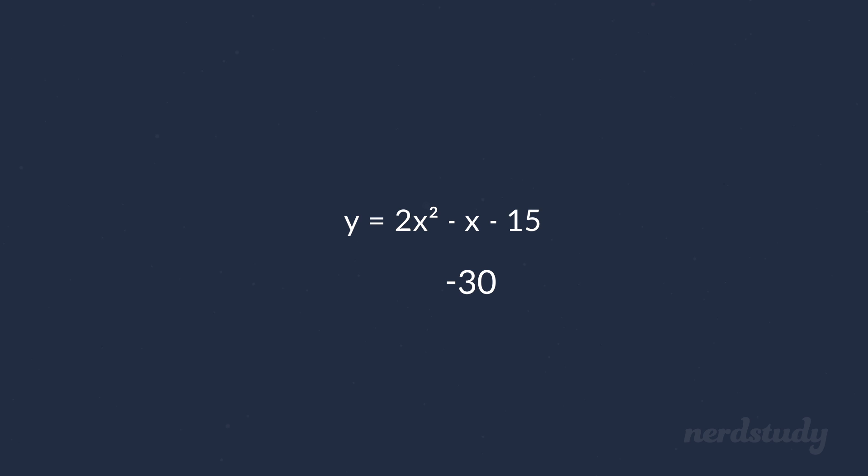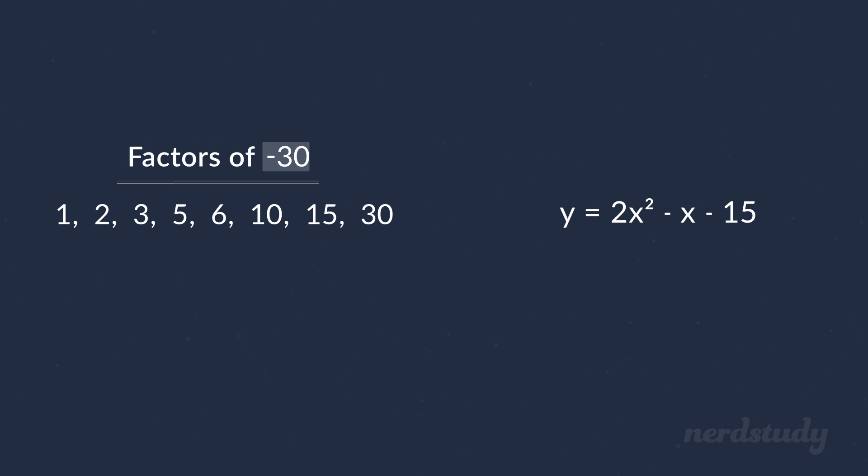Then we find all of the factors of negative 30, which are the negative and positives of 1, 2, 3, 5, 6, 10, 15, and 30. And since negative 30 is a negative number, it must be a negative factor multiplied with a positive factor. All right. And these two factors need to add up to be equal to our B, which is negative 1.